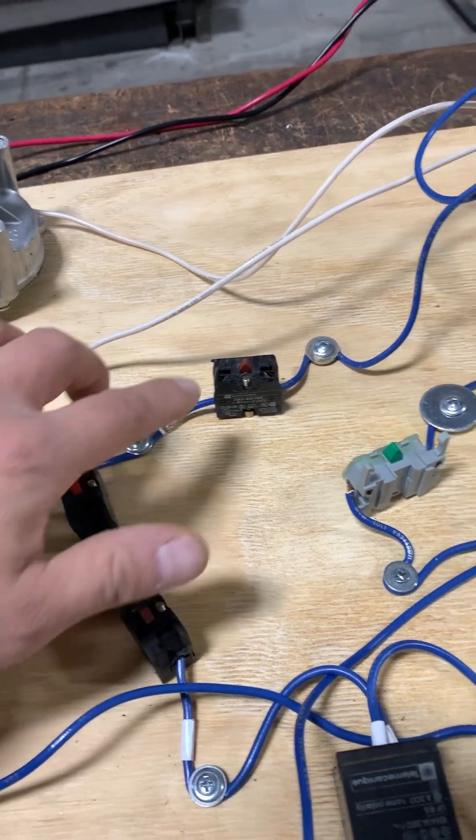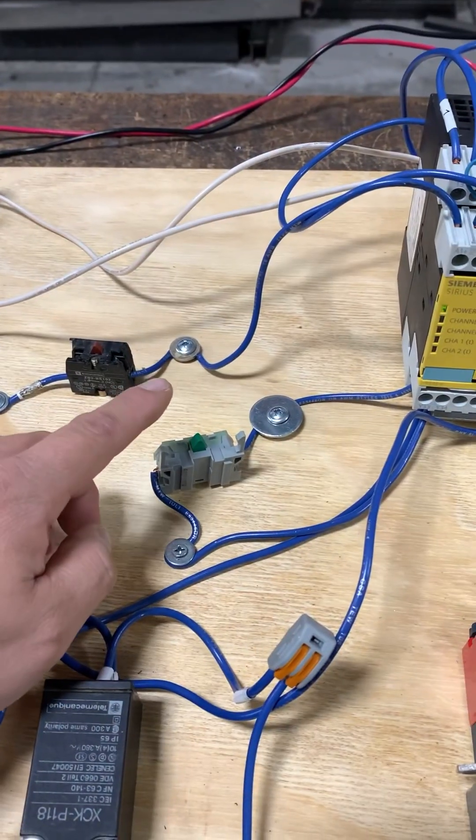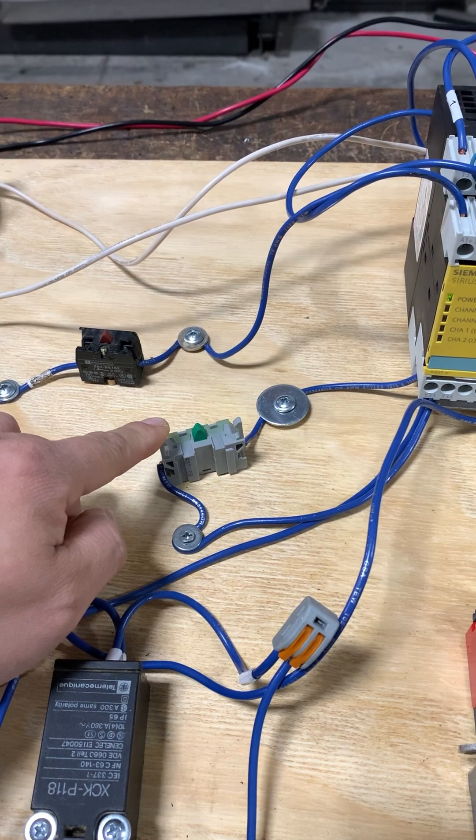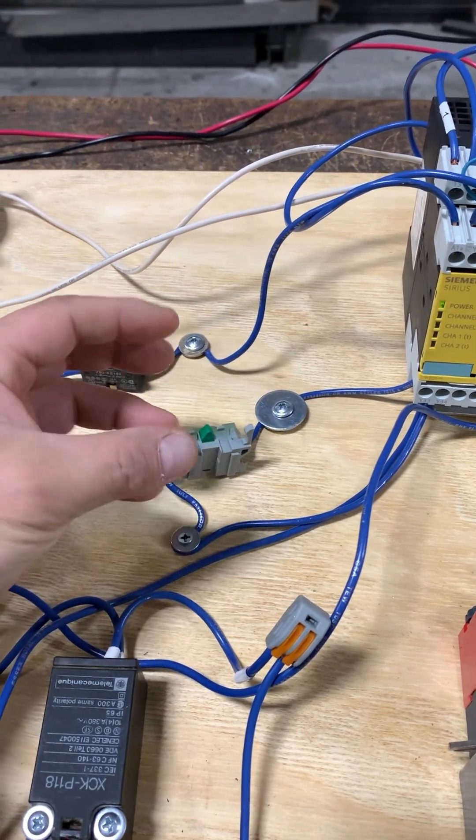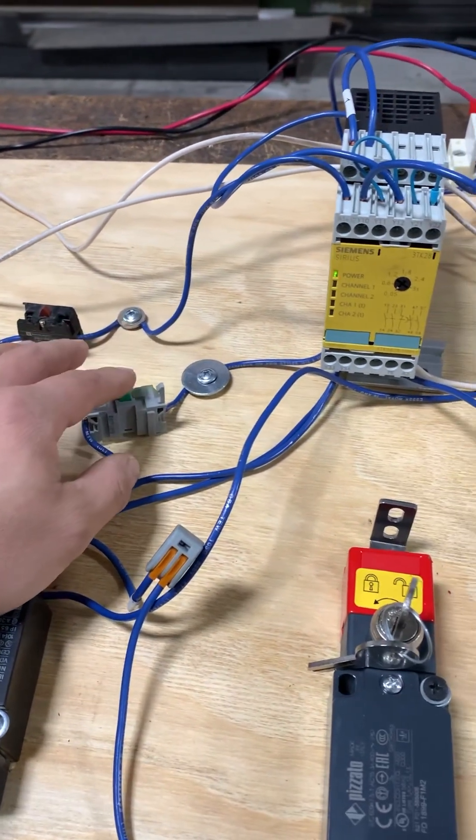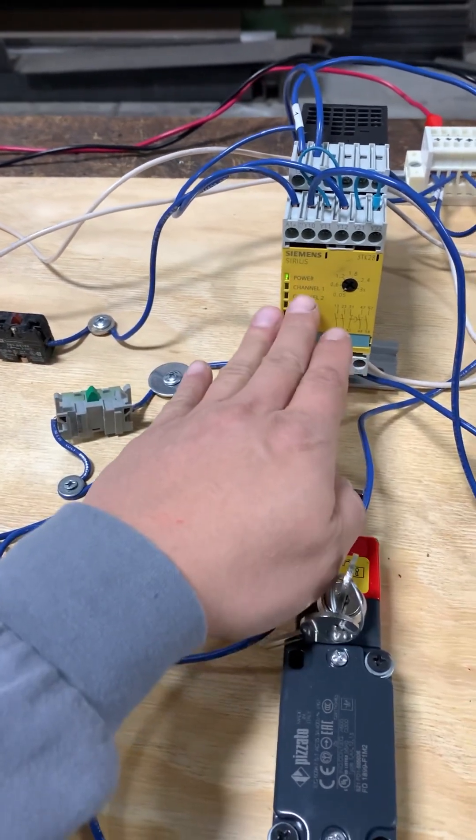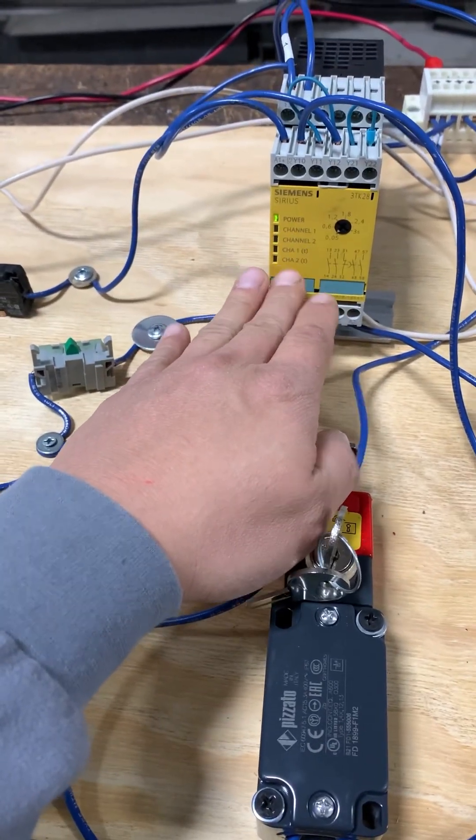So I have one e-stop, two e-stop, three e-stop. Then I have this push button—again, just a contact block, I don't have the actual button—and that is what's going to trigger the safety relay to complete.